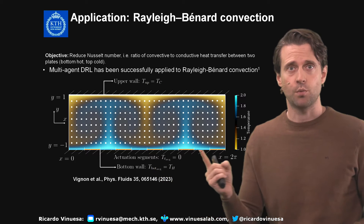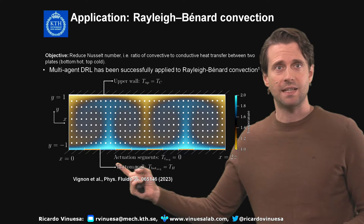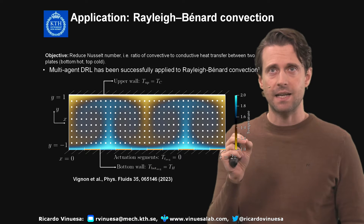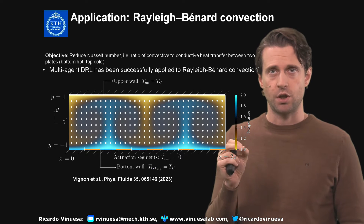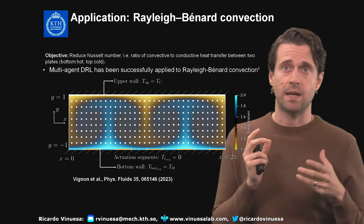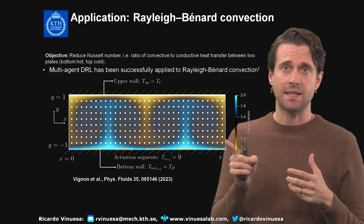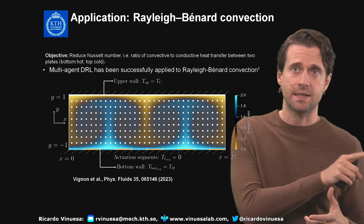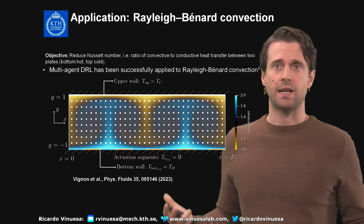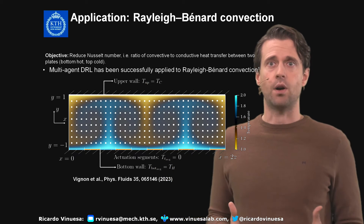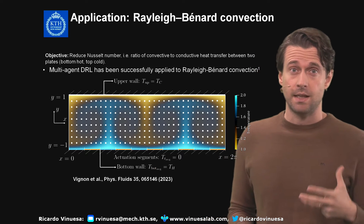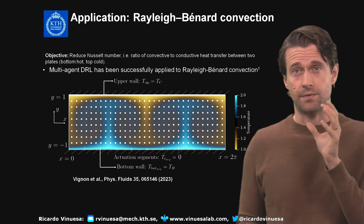On the bottom wall there are a total of 10 segments. In these segments we can define the temperature, so in the reinforcement learning setup we find a way to dynamically optimize the temperature values on these segments to adapt to the flow and hopefully minimize the Nusselt number.